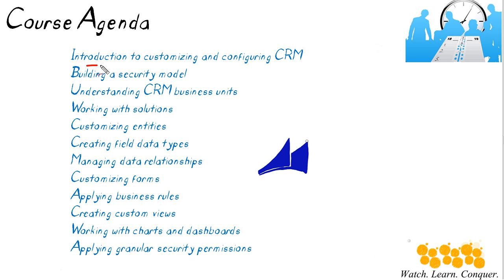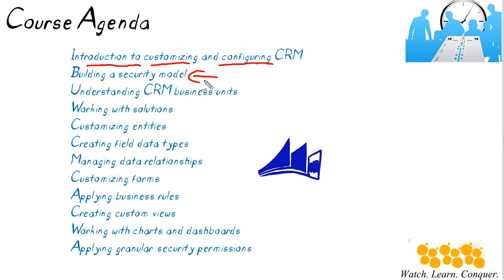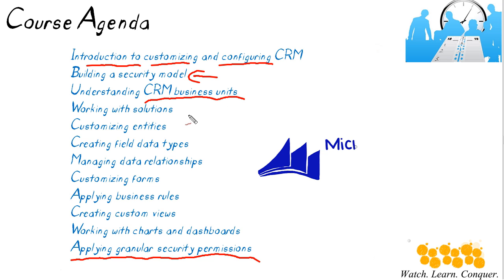We're going to begin with an introduction to customizing and configuring, and I'll introduce the three main processes available in CRM that may need customizations. We'll talk about security roles and building a security model, and towards the end of the course we'll cover applying granular security permissions. We'll also introduce and create a new business unit, and then look at how we apply changes to CRM using solutions — we'll spend a lot of time inside a solution.